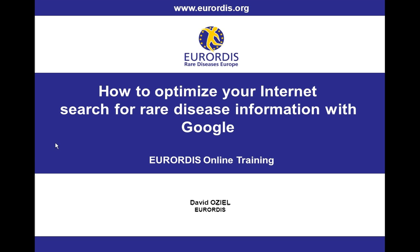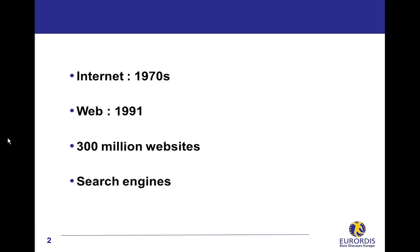Internet, the abbreviation of International Network, was developed in the 1970s. On this network, the first website was launched in 1991. In 20 years, the number of websites has dramatically increased and currently there are more than 300 million websites in the world. So finding your way around may be difficult.